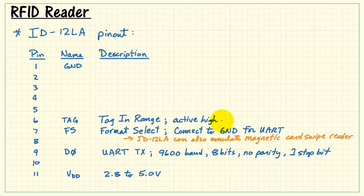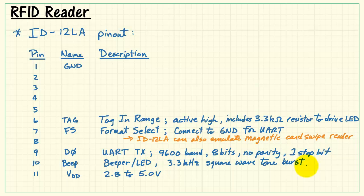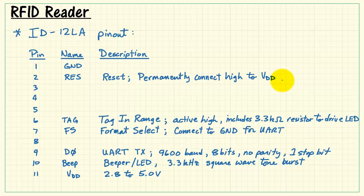Pin 6, tag in range. This is active high signal. It also includes a 3.3 kilo ohm resistor if you'd like to drive an LED directly. But that's the thing that tells us that we've got a transponder in range. Pin 10 generates a 3.3 kilohertz square wave tone burst, and you can also either connect that to a buzzer or connect it to an LED. Pin 2 is the reset. Just go ahead and connect that to VDD permanently.